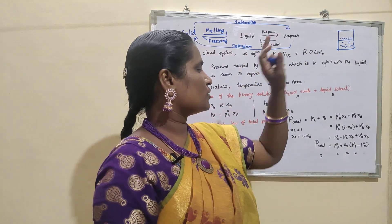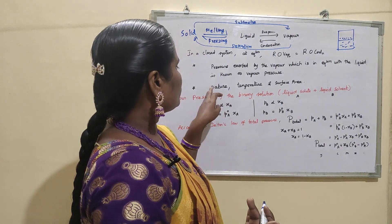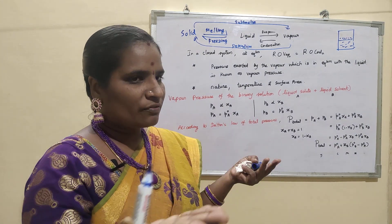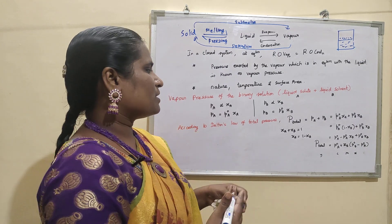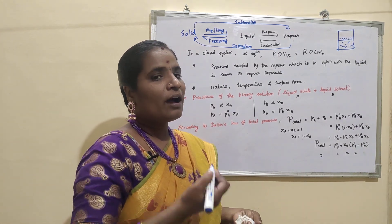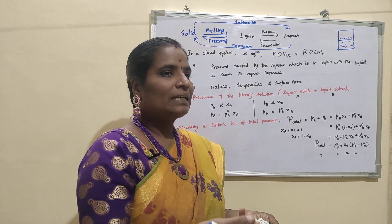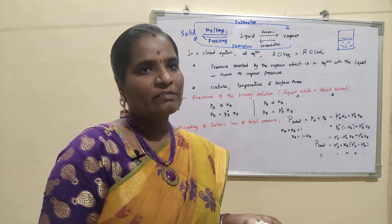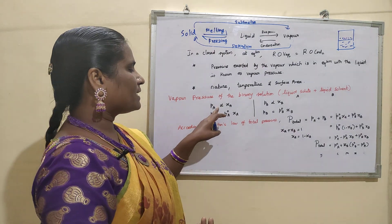The factors which affect vapor pressure are: the nature of the liquid, the temperature, and the surface area. Now we are going to see the vapor pressure for a binary solution made up of a liquid solute and a liquid solvent. For example, we take benzene as the liquid solute and toluene as the liquid solvent.